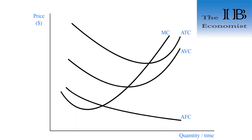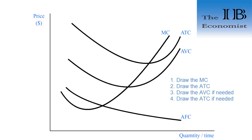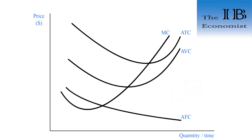This completes the overall picture of how the short-run cost curves look. You should practice drawing them — it should come easy and natural to you. Always follow the order: start with the marginal cost, then add the average total cost, then if needed add the average variable cost, and if needed add the average fixed cost.